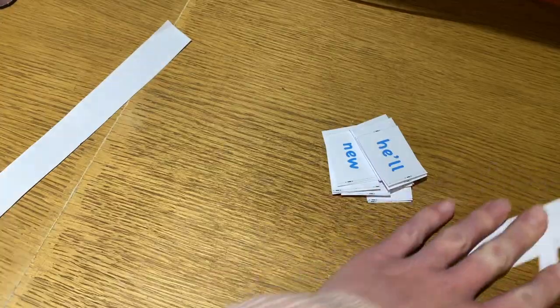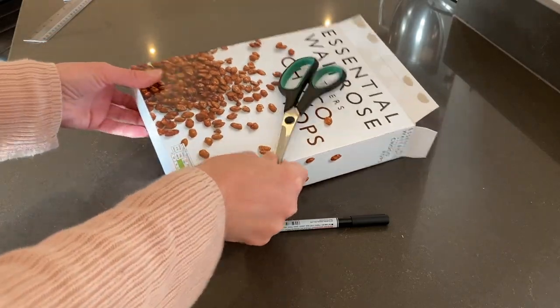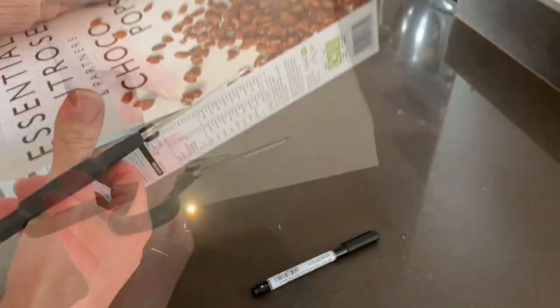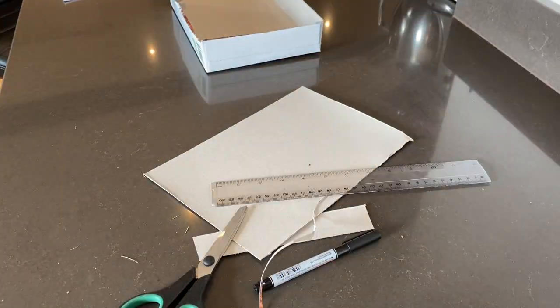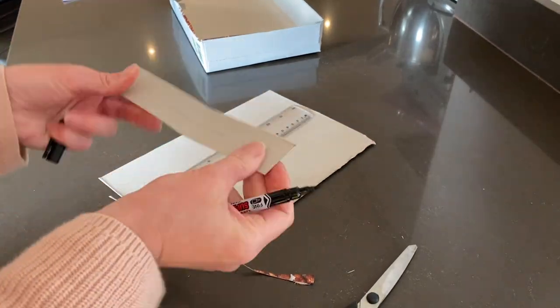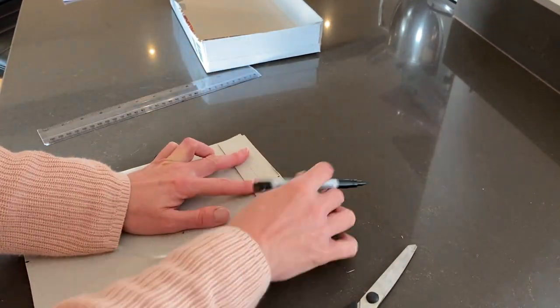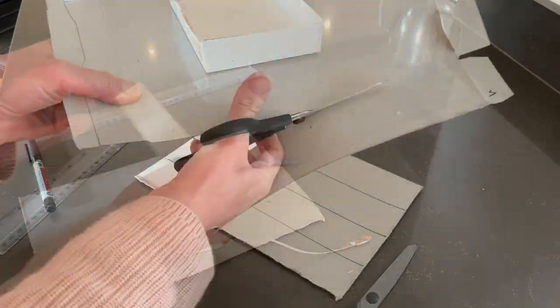Otherwise, you might need to do something like cut up an old cereal packet. You'll see that I've done that here. You don't even need a ruler if you don't have one. You can use the side of the cereal box to measure it out.